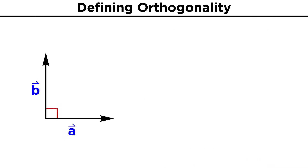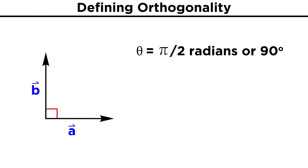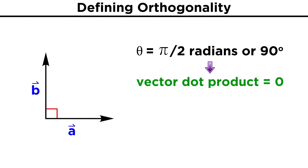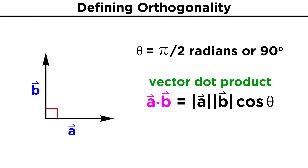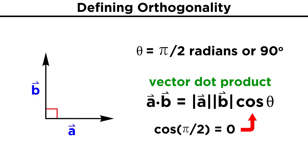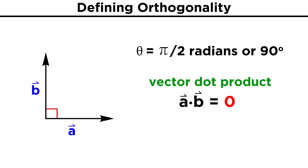First, let's recall the basic definition: two vectors in a vector space are considered orthogonal if they are perpendicular to one another, which means that the angle between them is half pi radians, or 90 degrees. This situation will occur if the dot product between the two vectors is equal to zero, since the dot product equals the product of the two vector lengths times the cosine of the angle between them, and the cosine of half pi is zero, which makes the dot product equal to zero.